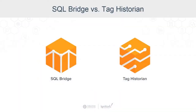There's always a lot of questions about these two modules when you look at the software stack — the SQL Bridge module and the Tag Historian module. They're both very important modules for Ignition, they perform different functionalities, and there are significant differences between them. I want to clear those up before we get into SQL Bridge in particular.